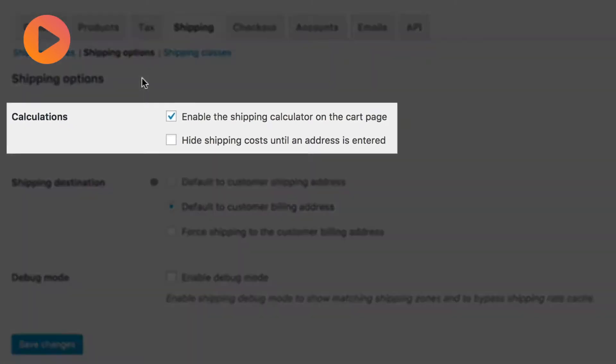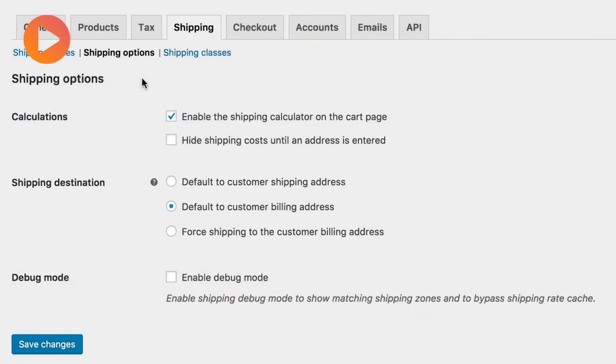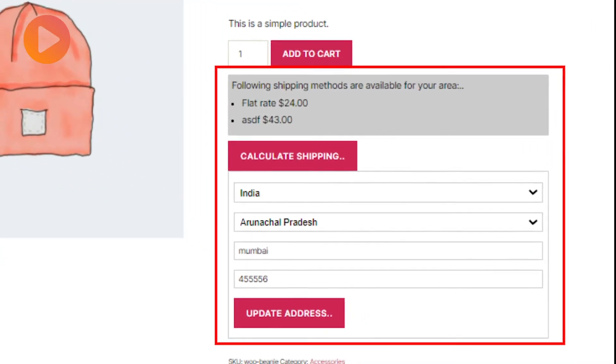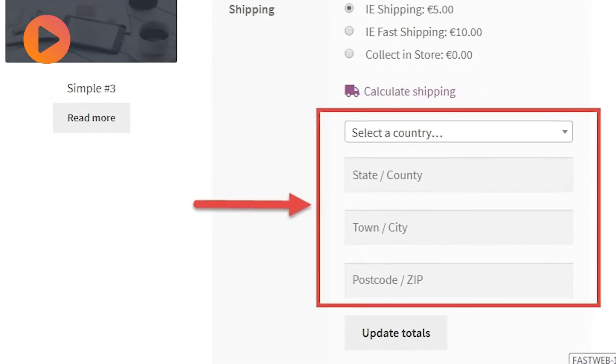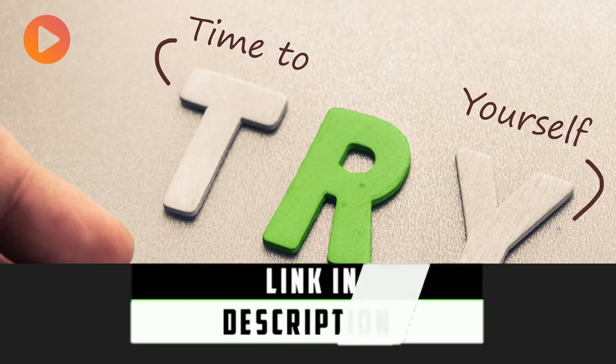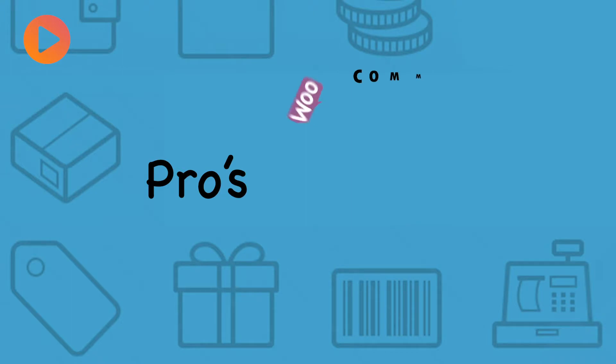You can also set your rate to automatic and give your customer the lowest rate based on their address, or even offer free shipping. Moreover, you can hide the shipping rate until an address is entered, offer a shipping calculator in your shopping cart, and let your customer ship to their billing address only, or to a separate shipping address. If you want to try this tool or just have a look, then click the link in the description below. And now let's see what the pros of this tool are.